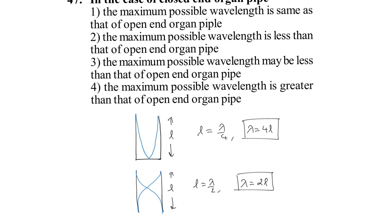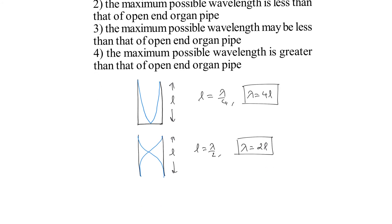The next option is given that the maximum possible wavelength is less than open end organ pipe. So in case of open end organ pipe, it is 2L and here it is 4L, so it is more than that.